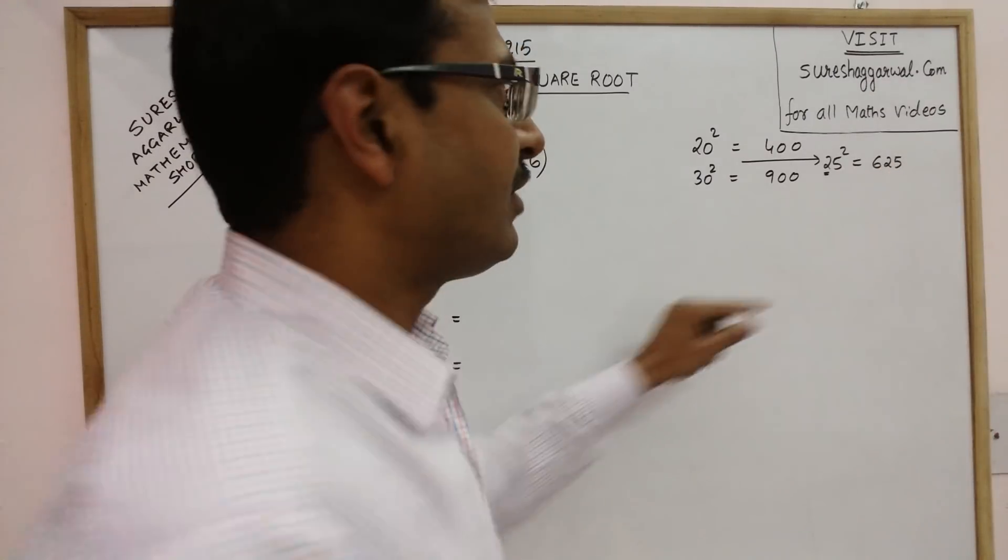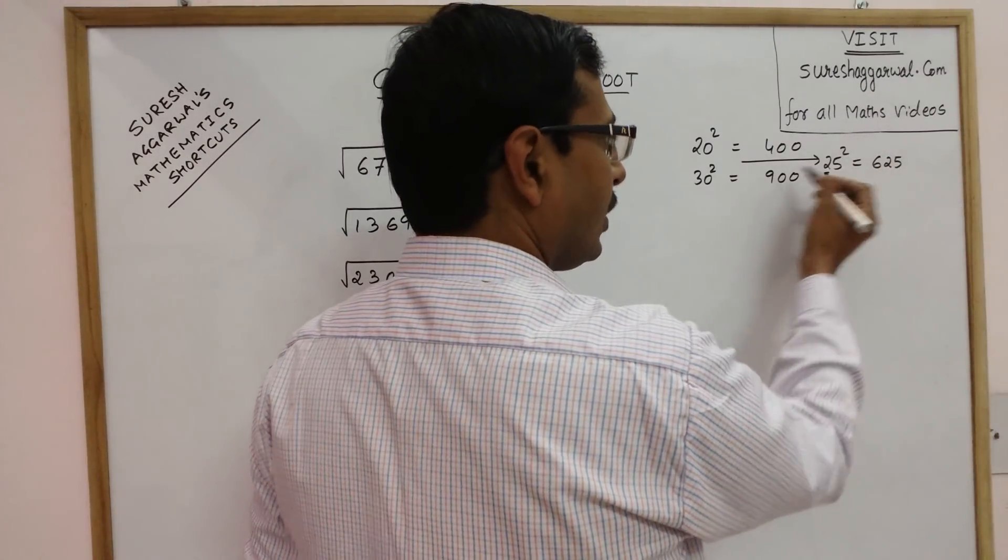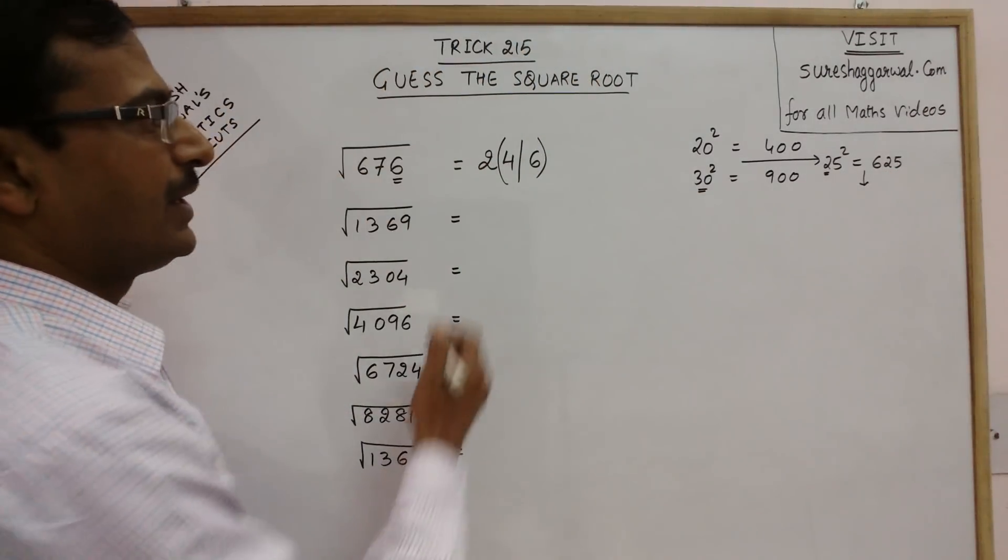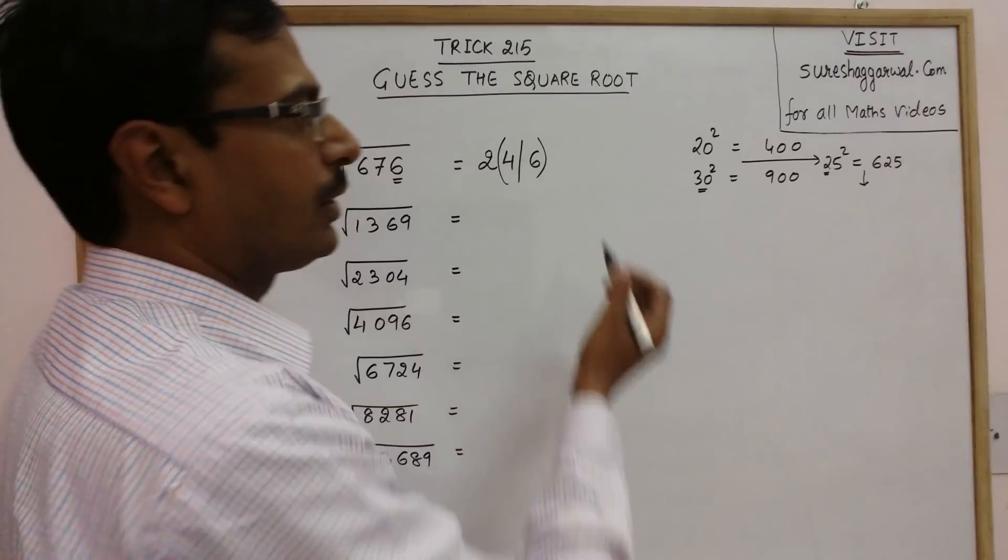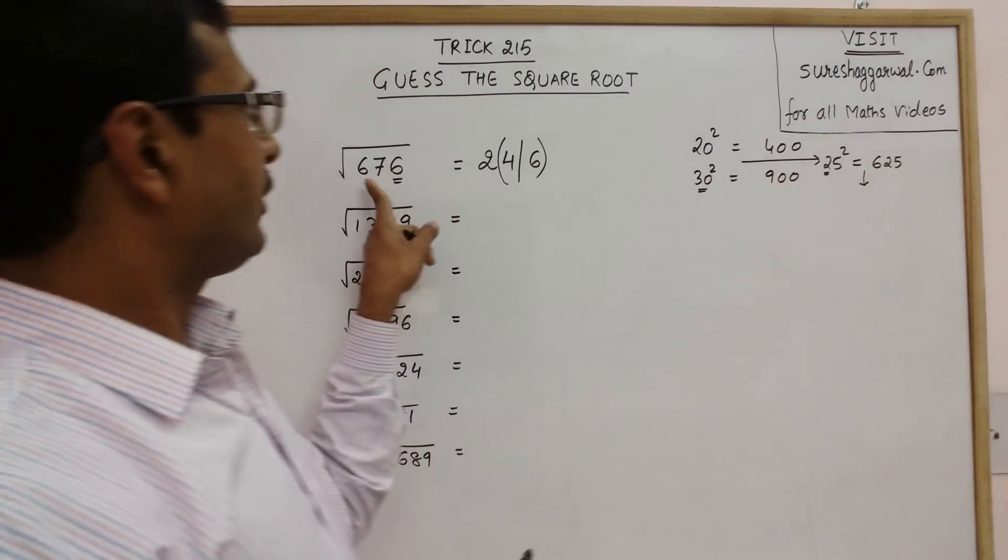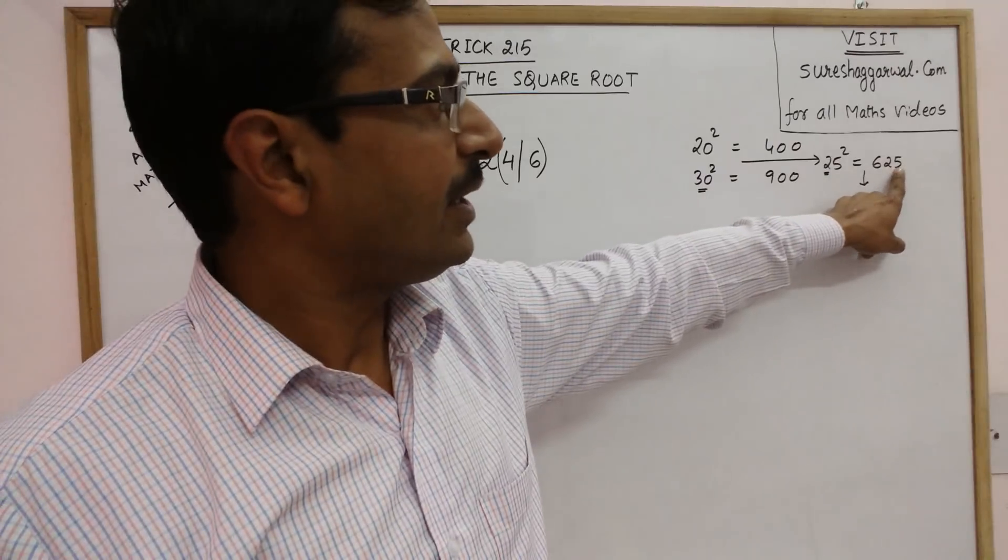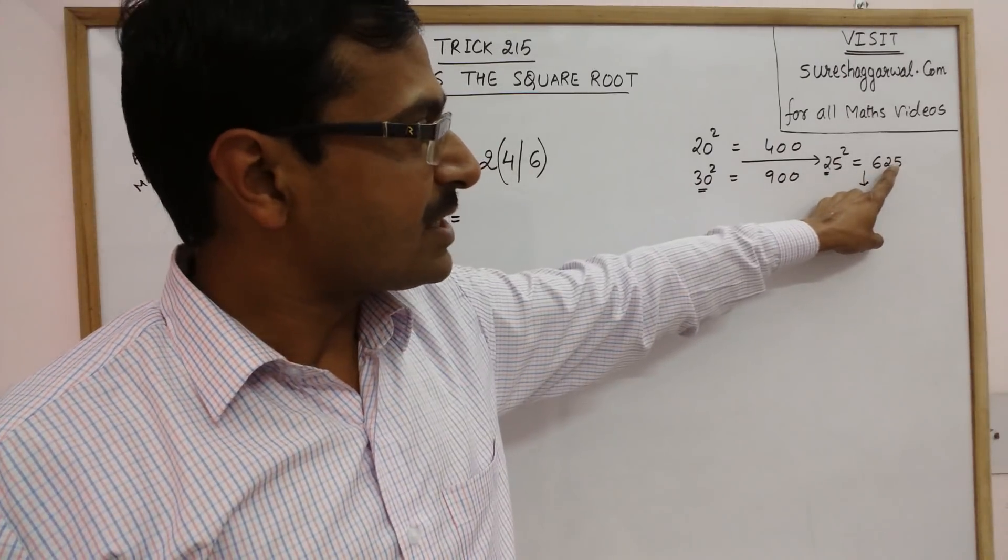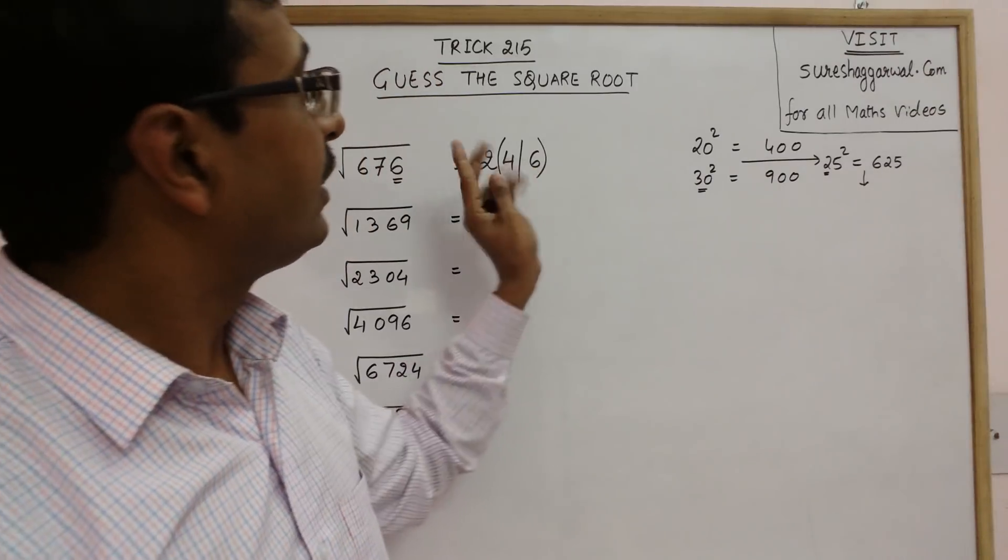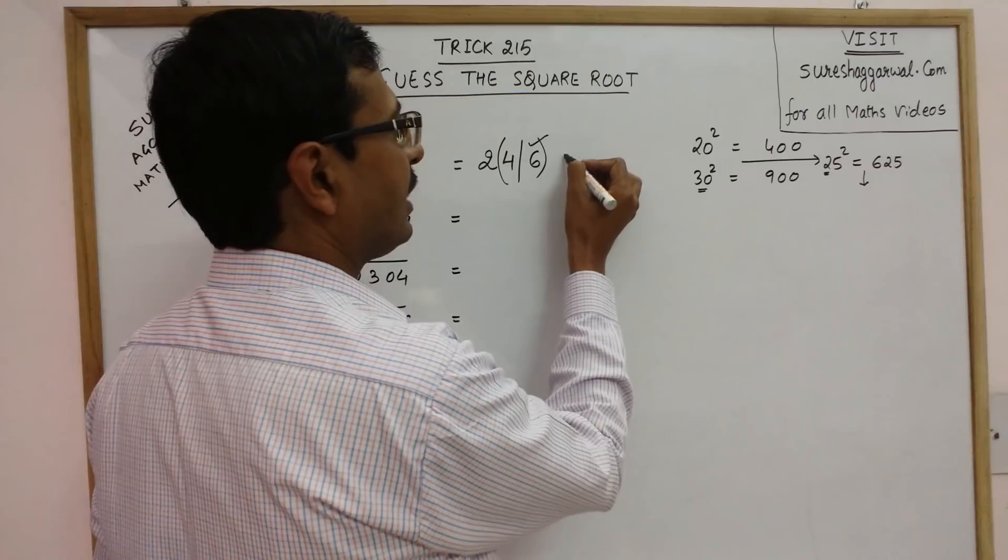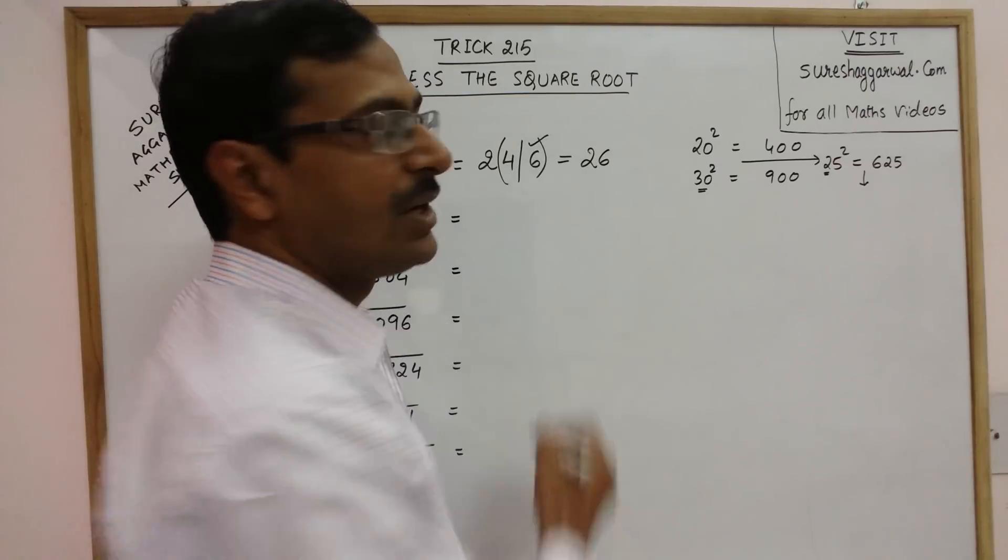So our answer will be closer to 30. Now if we take 4, this will go above. So if our number was smaller than 625, then answer would have been 24. But if it is larger than 625, the answer is the latter number that is 6. So 6 will come in the unit place. So our answer is 26.